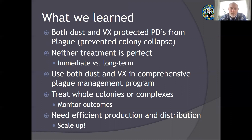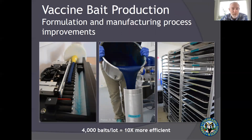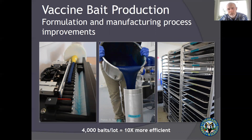In 2016, USGS did a technology transfer with Colorado Serum Company in Denver to start making the vaccine available on a larger scale. On bait production, we made changes at Parks and Wildlife — moving from cutting baits by hand in batches of a couple hundred to a more mechanized mass production process in lots of 4,000 baits, making us at least 10 times more efficient. We also replaced the rhodamine B biomarker with blue food dye, allowing us to make a more palatable and slightly smaller bait.